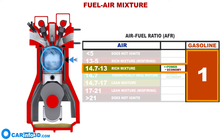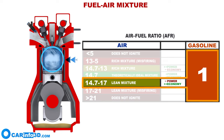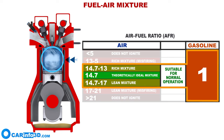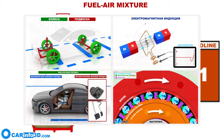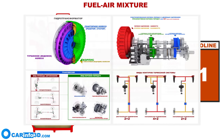By reducing the amount of air, we get a more powerful engine but poorer fuel economy. By increasing the amount of air, we get a more economical but less powerful engine. This range is suitable for normal engine operation. Further changes in the gasoline-to-air ratio will result in increased fuel consumption, decreased power, and possible misfiring. This concludes our review — for more information on engine subsystems and other topics, watch our next videos.